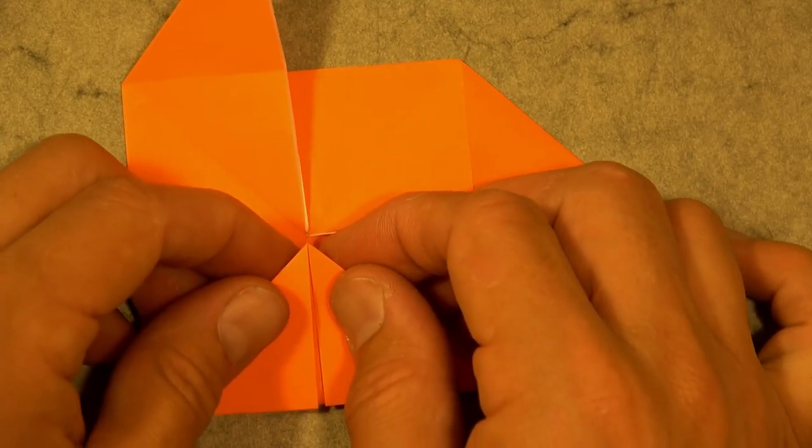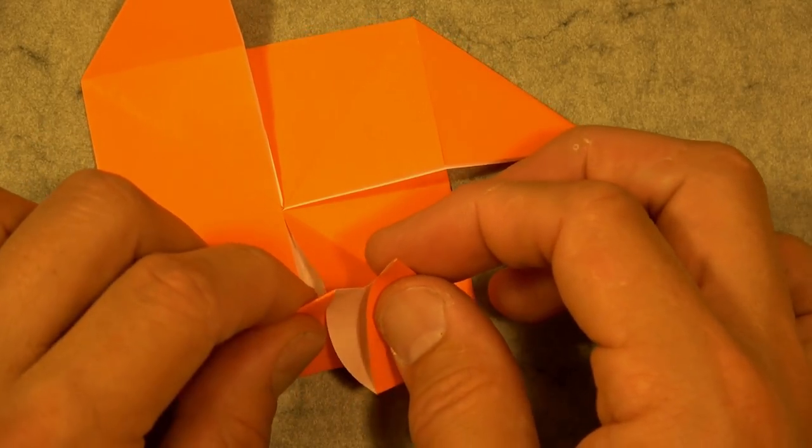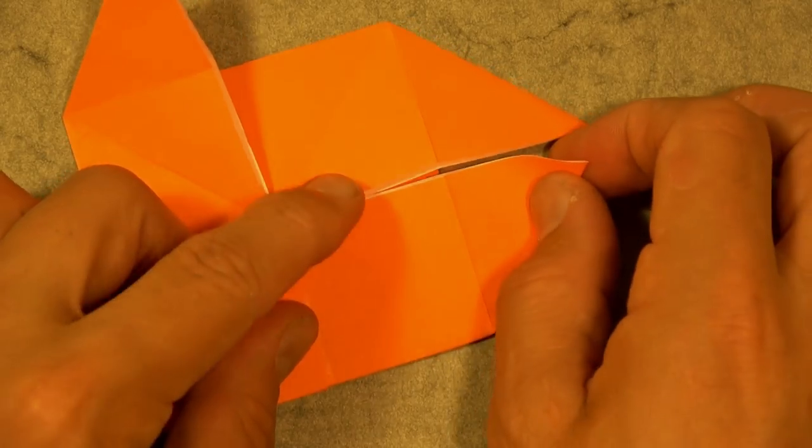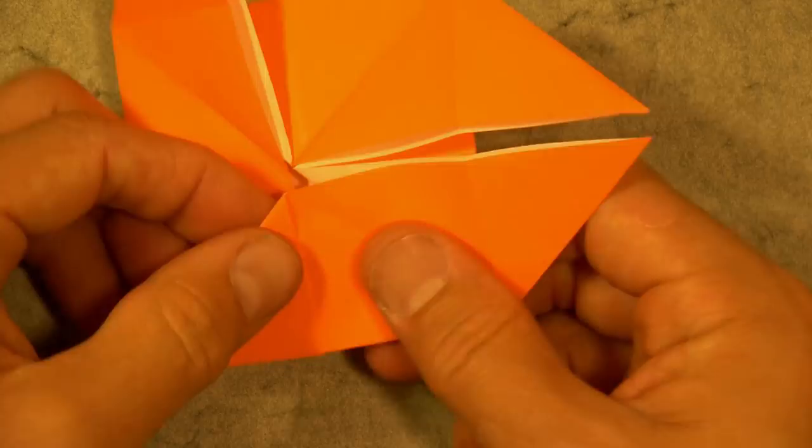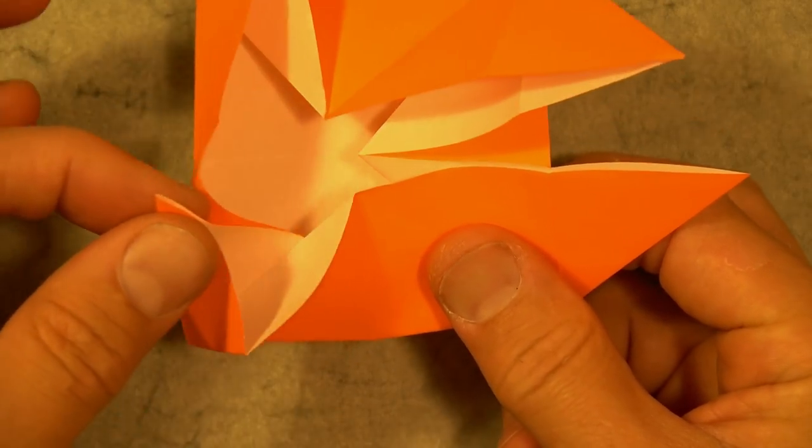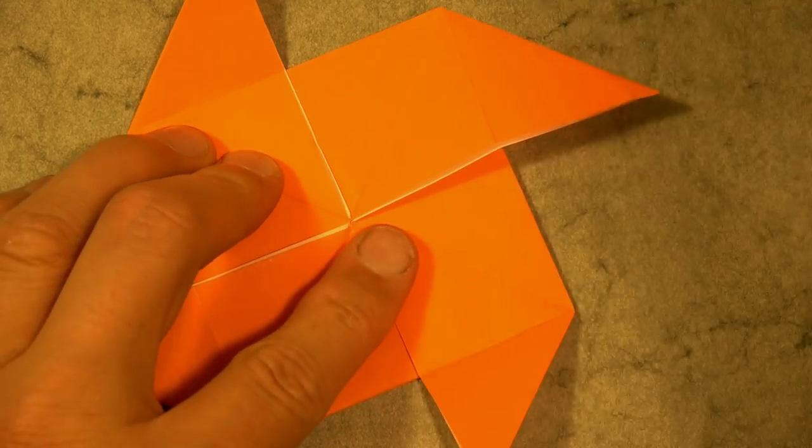And now we're going to do the same sort of thing here. Folding here. Folding here. Fold this corner out. Like this. And holding here. Pull this corner out. And flatten. And fold this corner down.